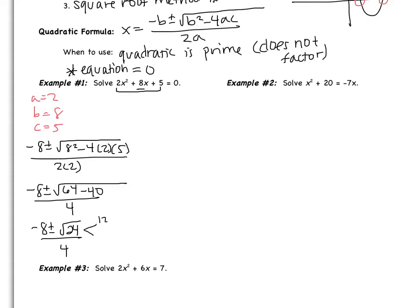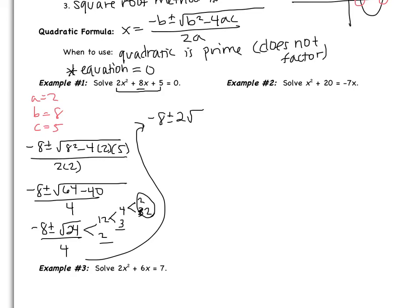24 is 12 times 2, and 12 is 4 times 3, so I have a pair of 2s with a 3 and a 2 left over. This becomes negative 8 plus or minus 2 root 6, all over 4. Now I can simplify — what can I divide 8, 2, and 4 by? I can divide them all by 2. So this becomes negative 4 plus or minus root 6, all over 2. And that's your final answer.